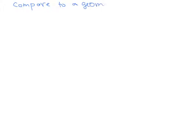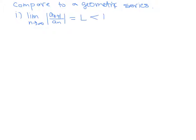We are going to prove the ratio test by comparing this series to a geometric series. We will start by proving the first part about convergence. We know that the limit as n goes to infinity of the ratio of a_sub_(n+1) over a_sub_n equals some L which is less than 1.